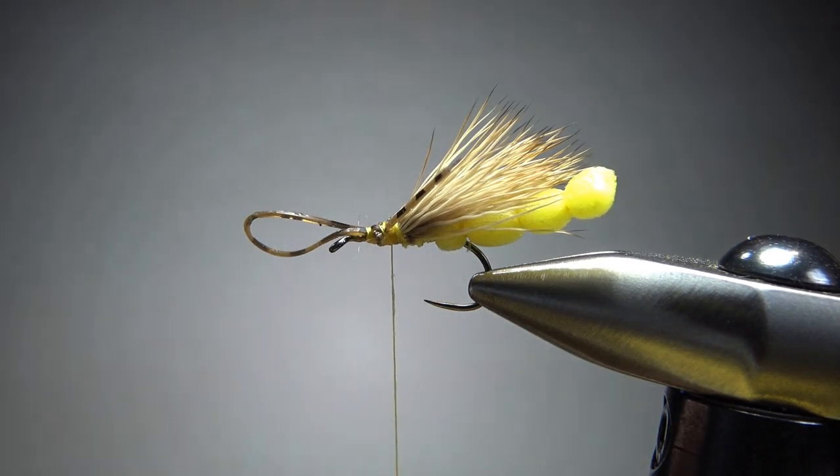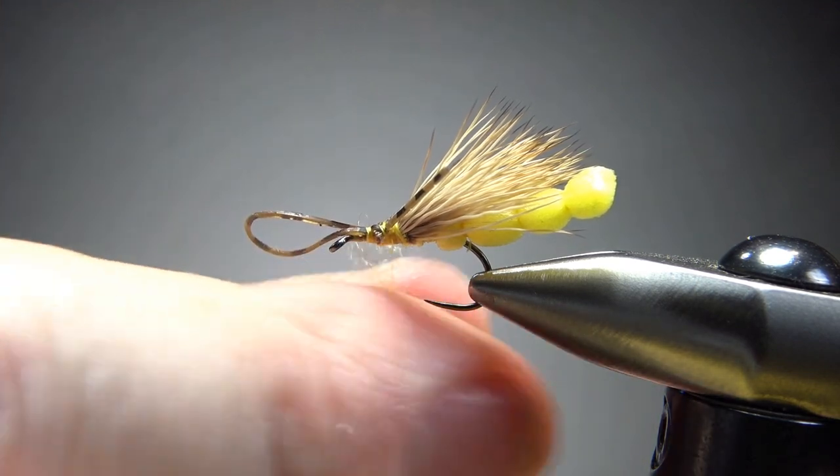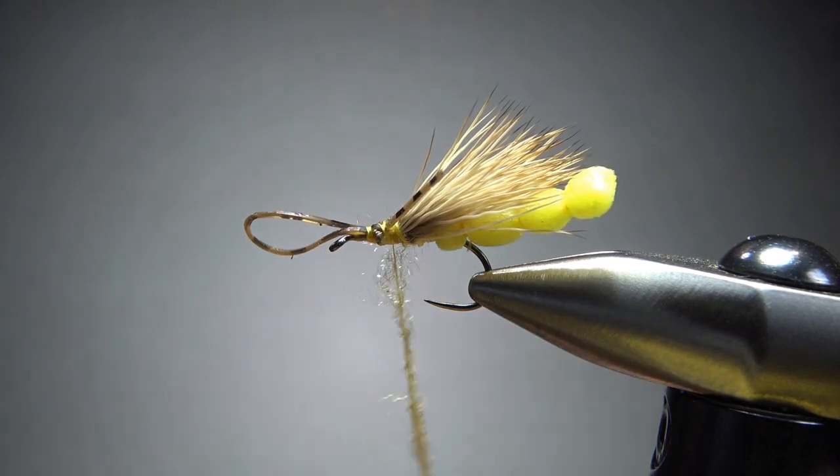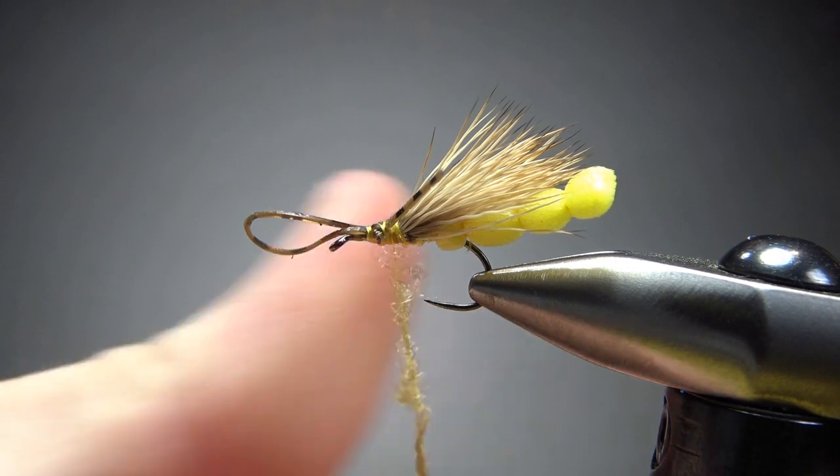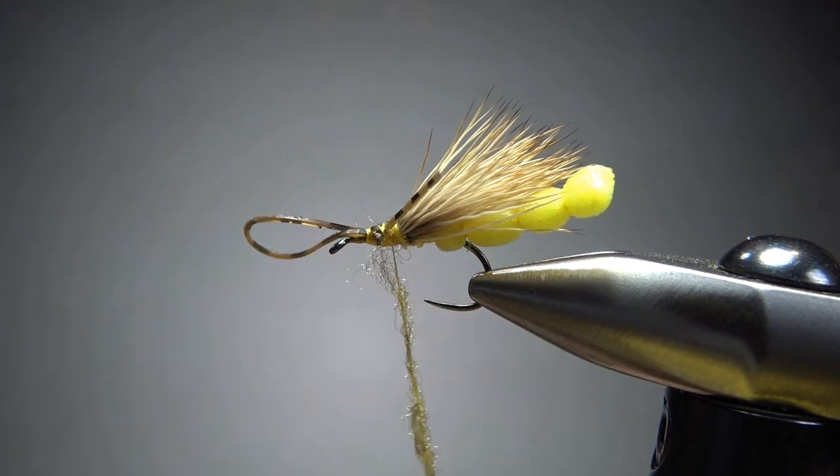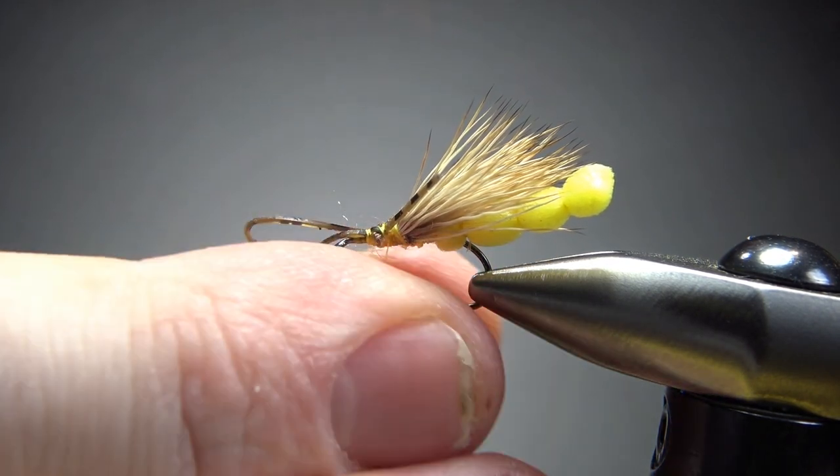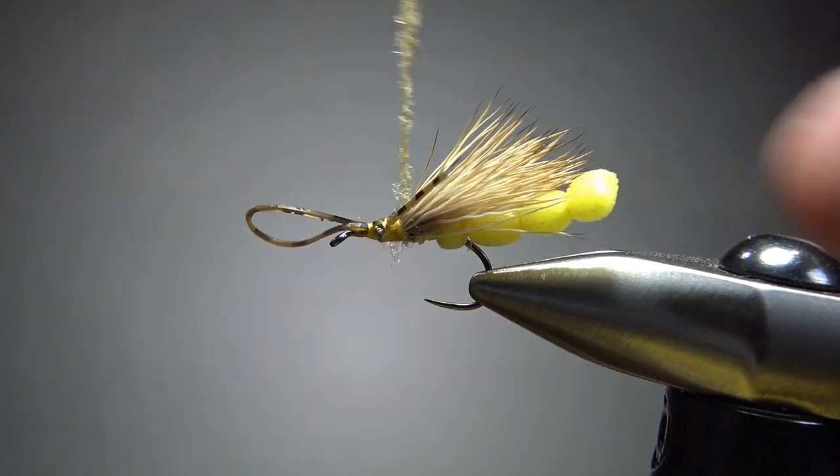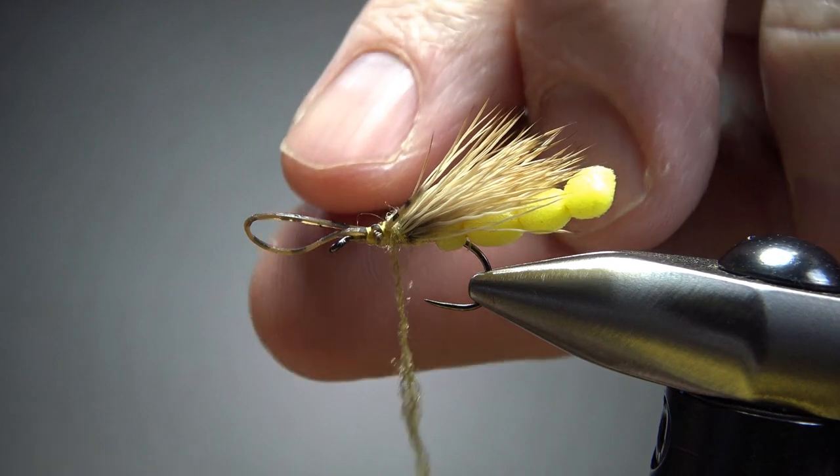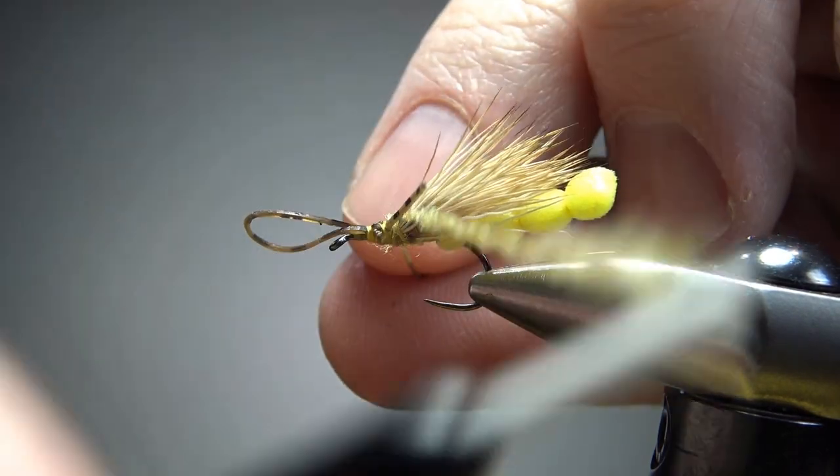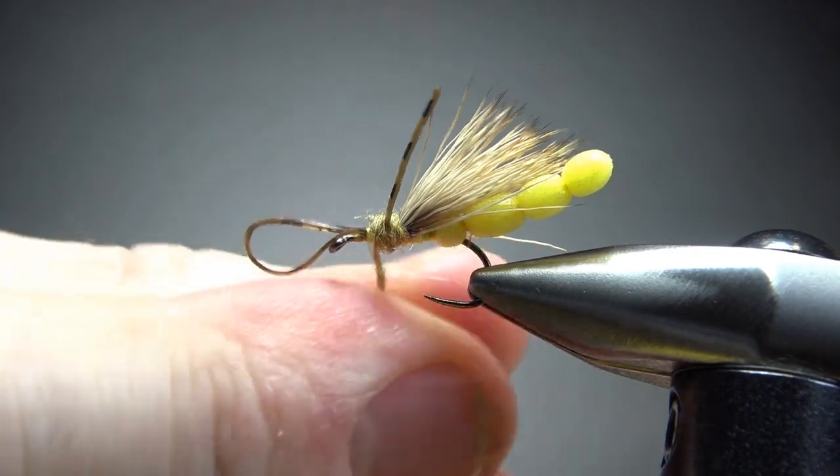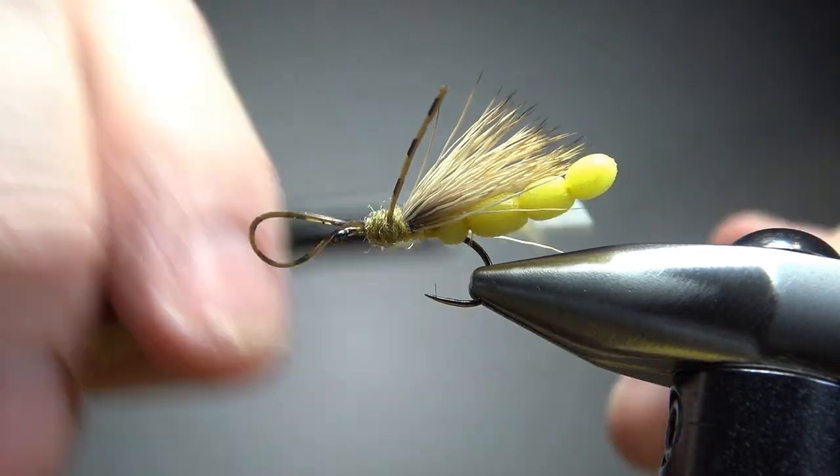And Dave Hughes mentioned using a synthetic, so I've got an Antron dubbing right here. I'm going to put a maybe a three inch noodle. So we're going to put a couple wraps behind those legs, a couple in between them, and then a couple up front. Now this might be the trickiest part of the fly, just trying to wrap this dubbing, get a couple wraps behind these legs, and then a couple in between it, and try to keep your, get a decent proportion thorax here.